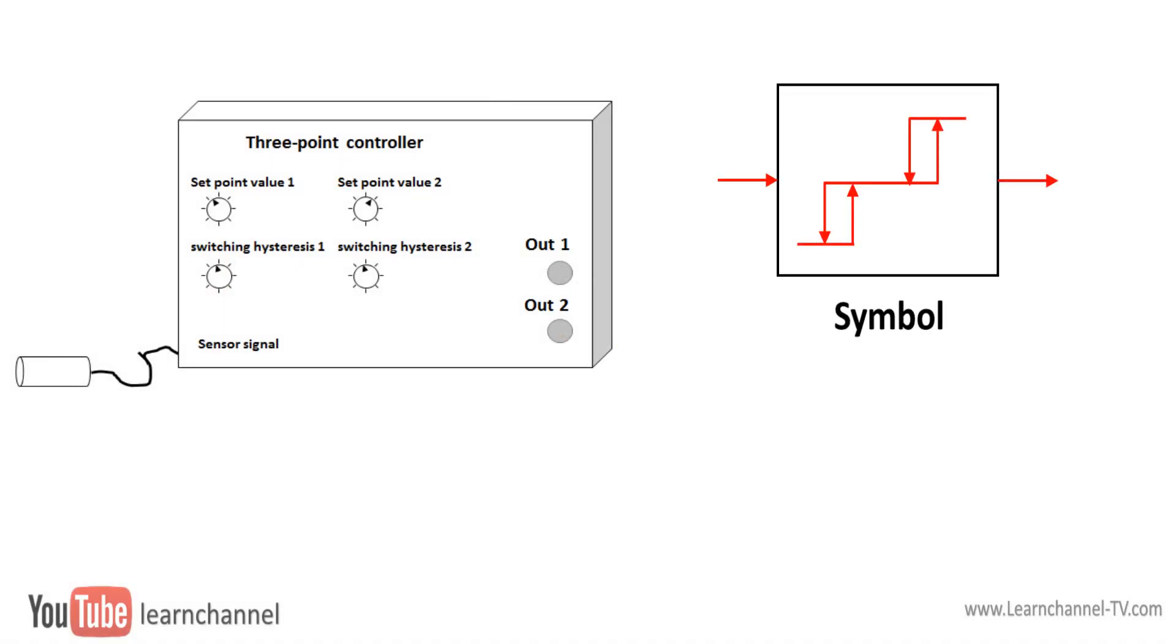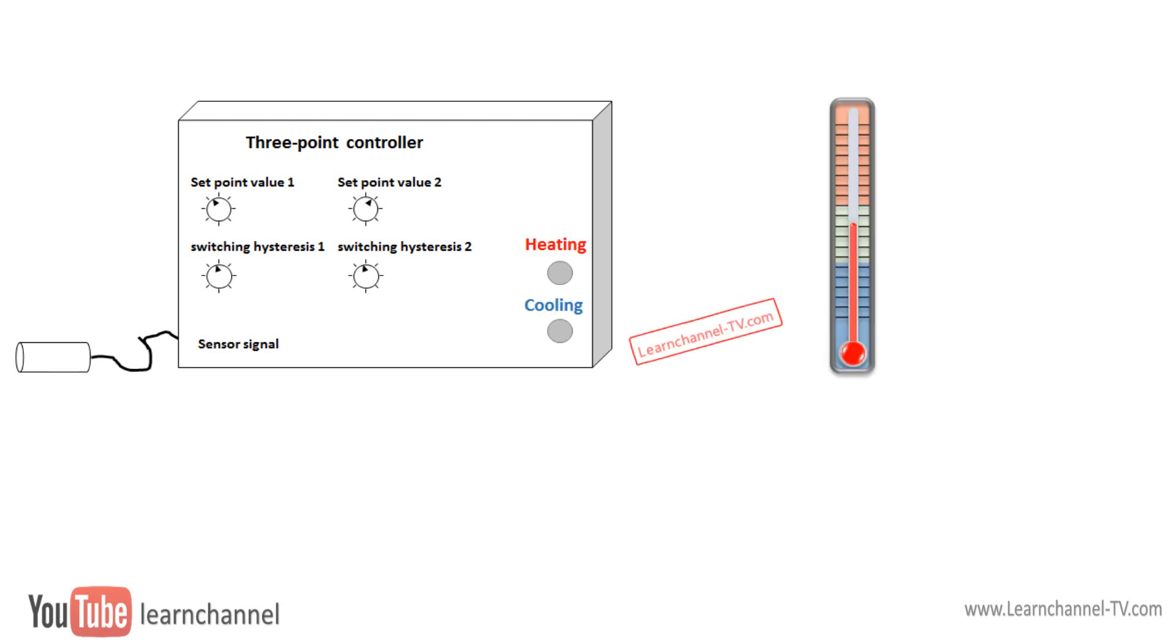A three-point controller is discontinuously operating controller with three output states. An example where a three-point controller can be used is a heating or cooling thermostat. Below the minimum temperature, it switches on a heater. Above the maximum temperature, it activates a cooling unit. Within the range between minimum and maximum temperature, both outputs are switched off.